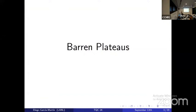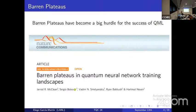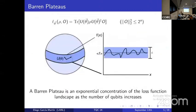Barren plateaus have become a big issue for the success of quantum machine learning since they were discovered in a seminal paper by the Google team. So what is a barren plateau? Say we have a quantum state ρ, an observable O with bounded norm — for instance a Pauli observable — and an ensemble of unitaries U which may or may not be parametrized. We want to estimate the expectation value of this observable at the output of the circuit, which is the loss function in variational algorithms. A barren plateau is an exponential concentration of this expectation value around the average value, typically zero, as the number of qubits increases.